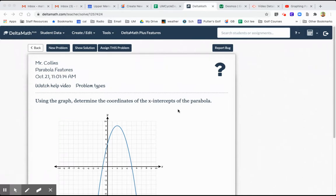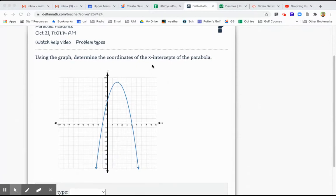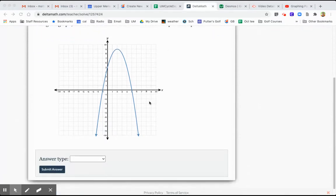The first one says, using the graph, determine the coordinates of the x-intercepts. Of course, x-intercepts are these points here where the curve intersects the x-axis. There happens to be two of them for this particular parabola.